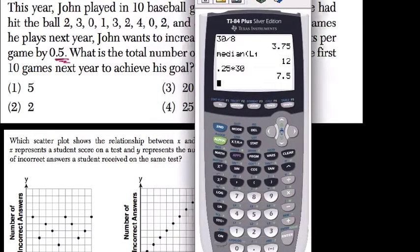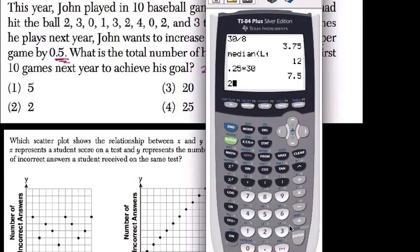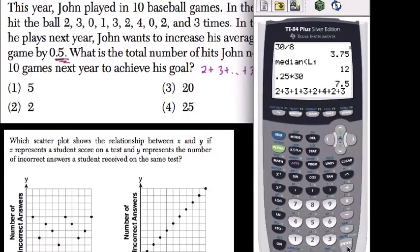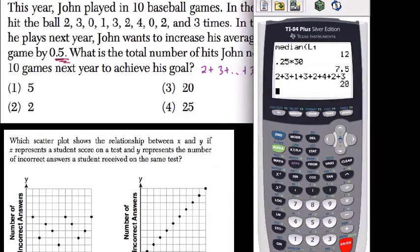So we're going to put them over here, so we have 2 plus 3 plus 1, and we're going to ignore the zero, plus 3 plus 2 plus 4 plus, ignore the other zero, 2 plus 3. That's this year. So this year he had 20 hits.